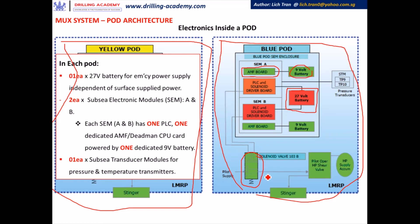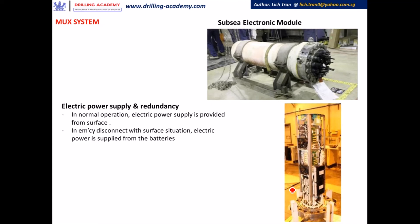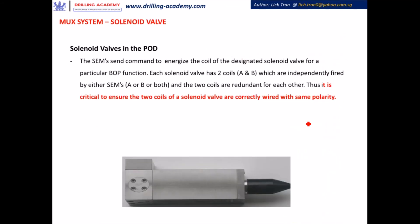The solenoid valve, as explained, sends the power fluid through it once activated, directing that power fluid to the SPM valve, which then sends the regulated power fluid to the stinger, and that power fluid goes down to the BOP stack. This is how an SCM looks — it is a sealed container containing all the electric parts: PLCs, AMF boards, batteries, and related components. In normal operation the electrical power supply is provided from surface, but in emergency disconnection from surface, the electrical power supply is from these batteries within the SCM. These batteries are therefore very critical for the operation of the BOP in emergency operating mode.